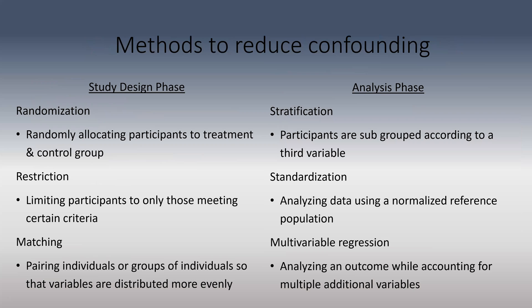These are methods to reduce confounding, split between study design and analysis phases. In study design, randomization is the core of an RCT — people are randomly allocated to treatment and control groups by a computer algorithm, with no one choosing assignments. This randomly distributes confounding variables like age, gender, race, and income status, so they should be balanced between both groups.